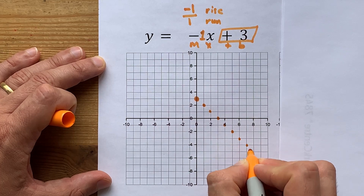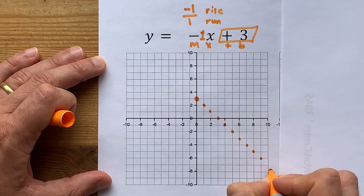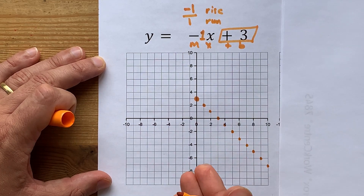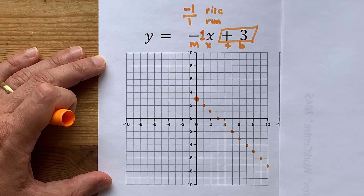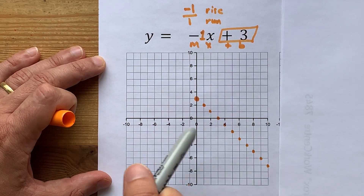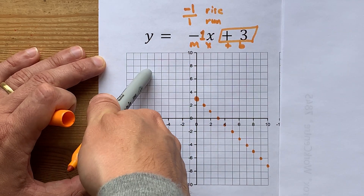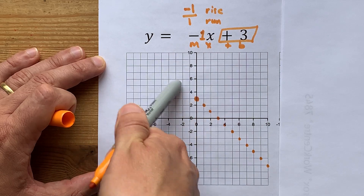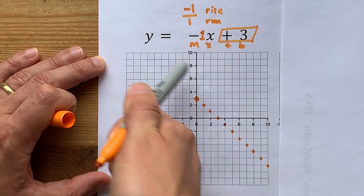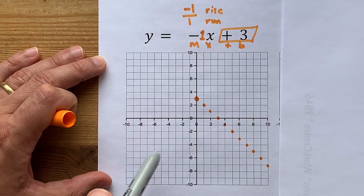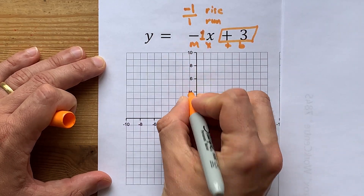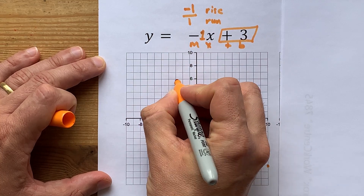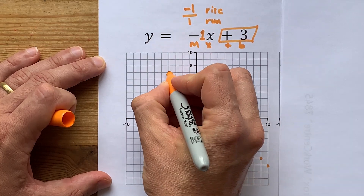Keep going until you run out of space on your grid or you get bored — put as many dots as your teacher wants. You'll also see that if we wanted to backtrack, we'd do the exact opposite: going up and to the left. Up 1, left 1, and so on.